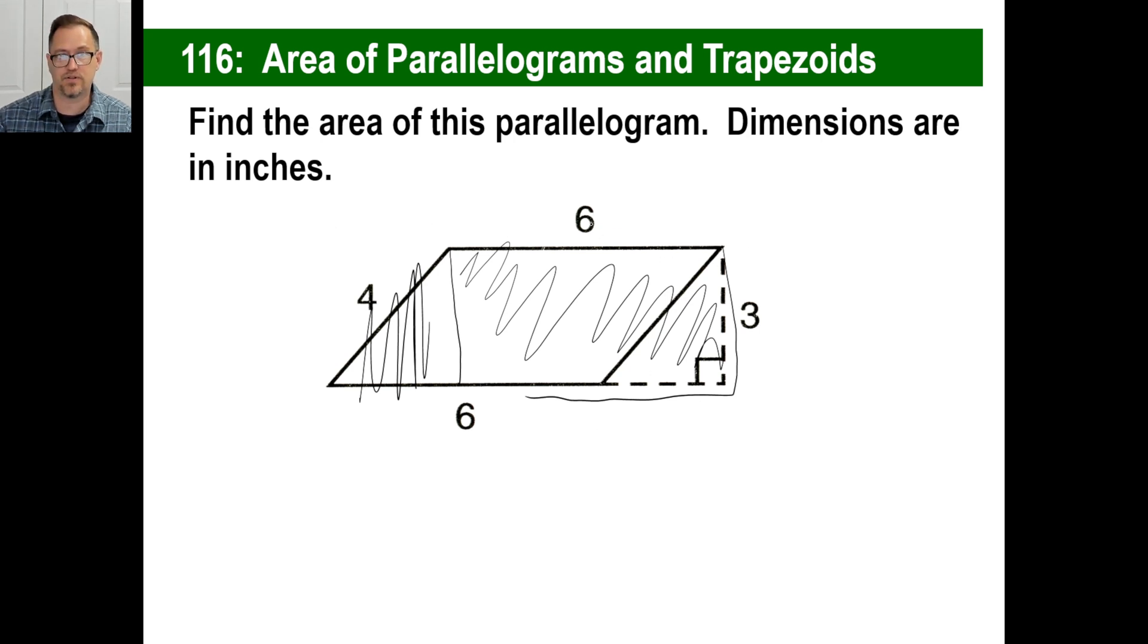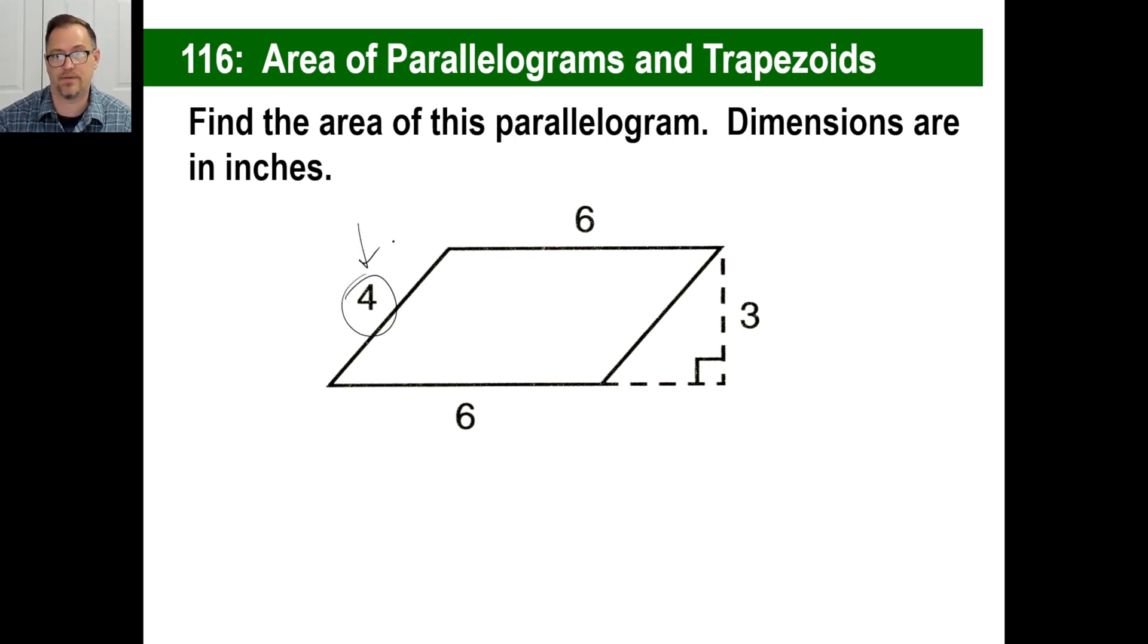The area of a rectangle is just the base times the height. 6 by 3 is 18. That's all you need. It doesn't matter that this part over here has got a 4 on it. We don't care about that. That's not the height. That will not play into our definition of area whatsoever. Parallelogram, all you need to know is how tall the thing is and what's the base. Either one of those bases is fine. It's going to be 6 times 3, 18. You're done, just like a rectangle.